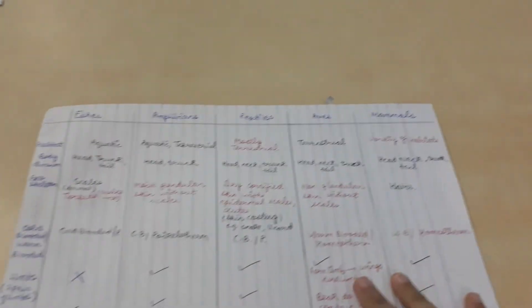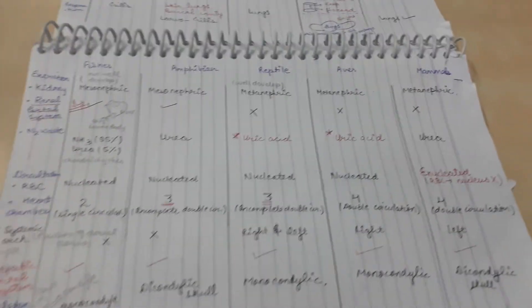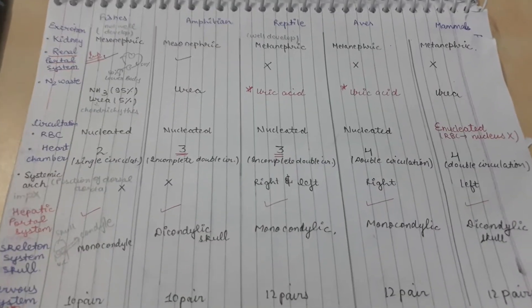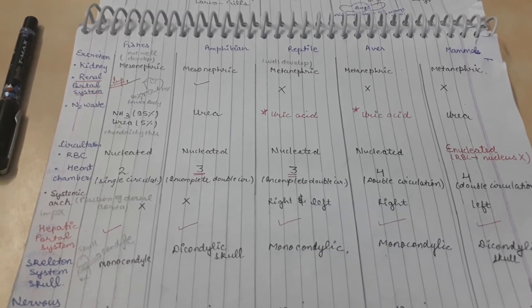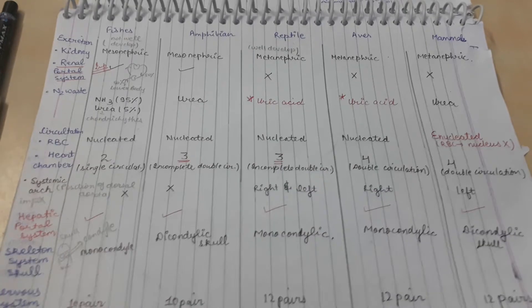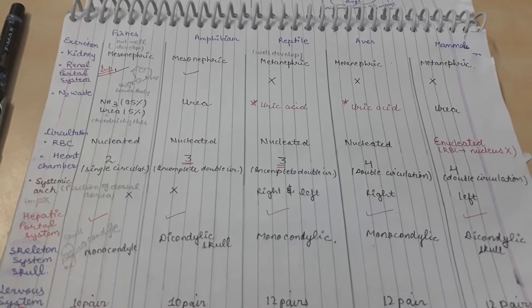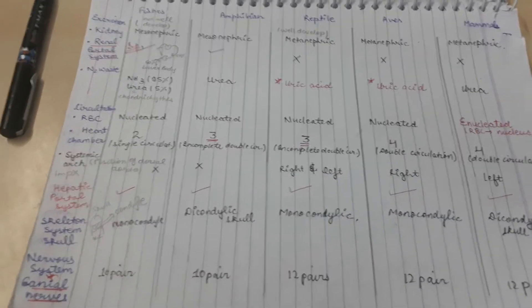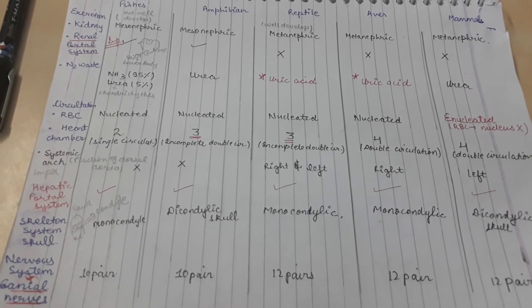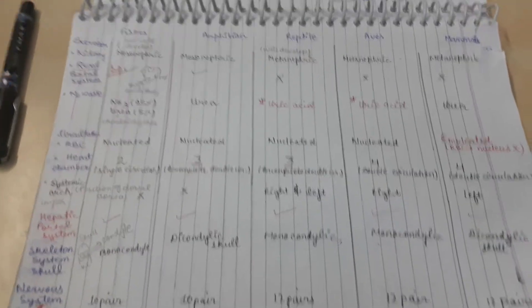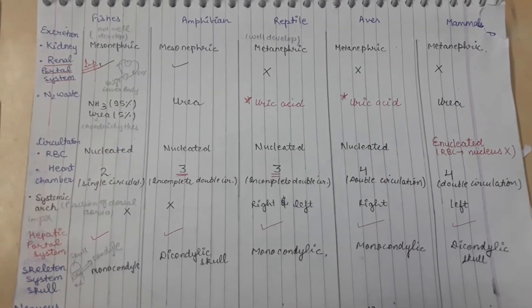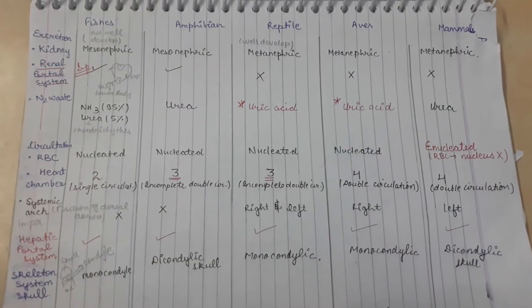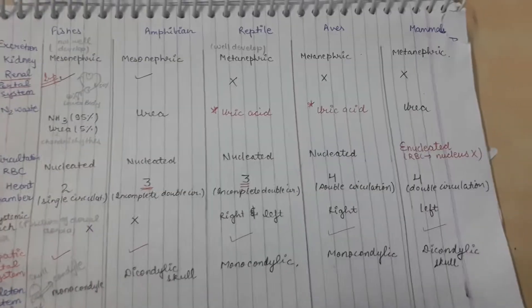Now excretion. Fishes and amphibians are mesonephric. Mesonephric means their kidneys are not well developed. Reptiles, aves, and mammals are known as metanephric. Renal portal system is present in organisms whose kidneys are not well developed, and these include fishes and amphibians.